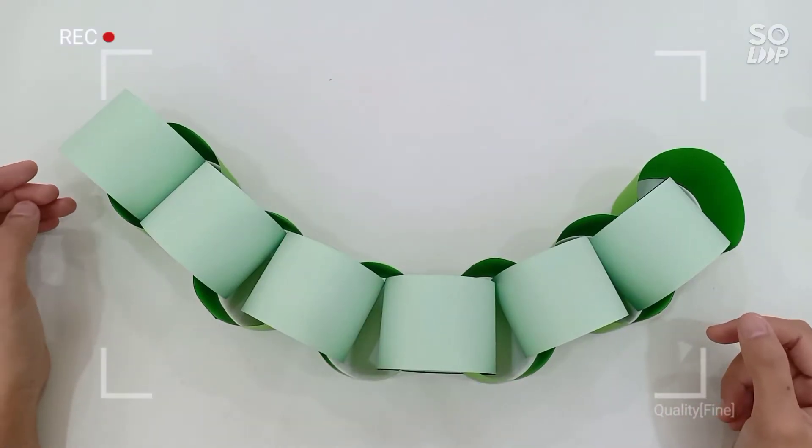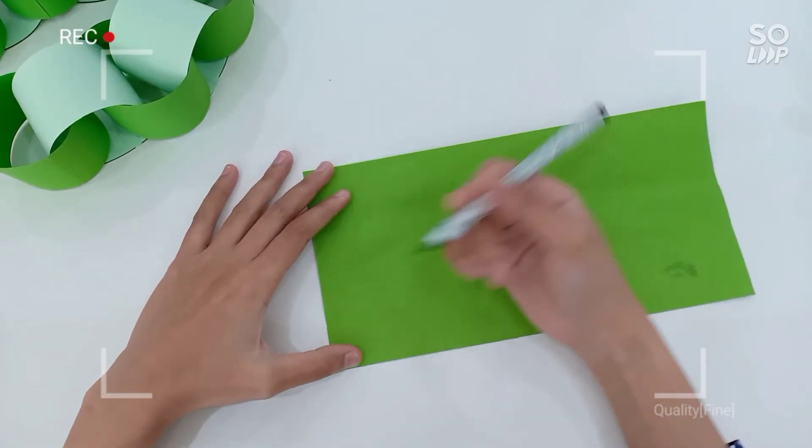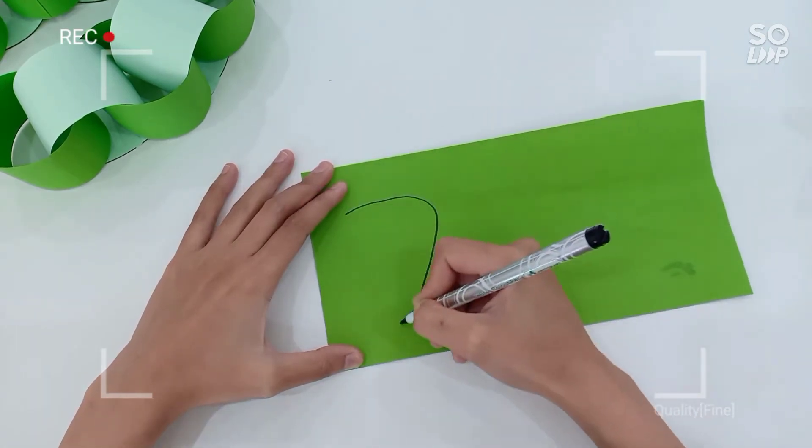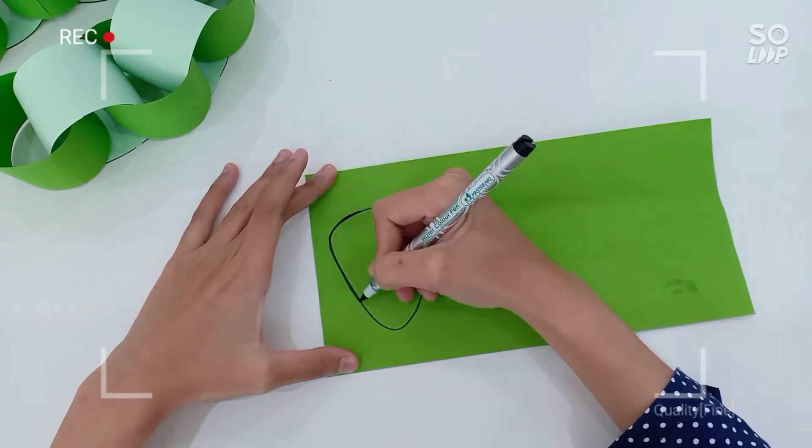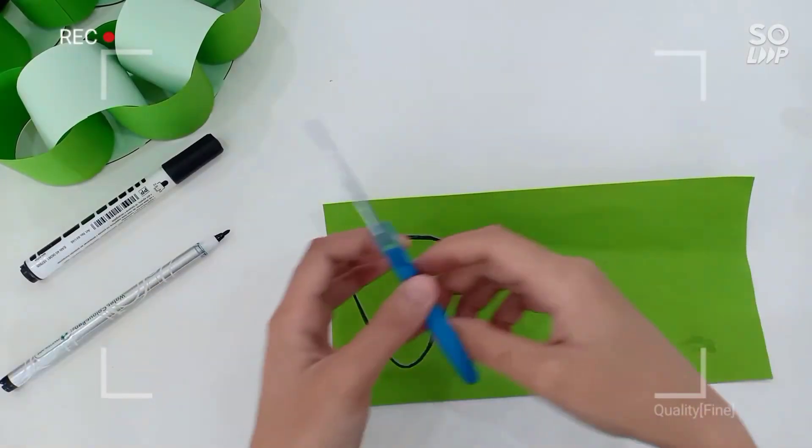Let's give our snake a head. I'm gonna draw a shape kind of like a curvy triangle and cut it out.